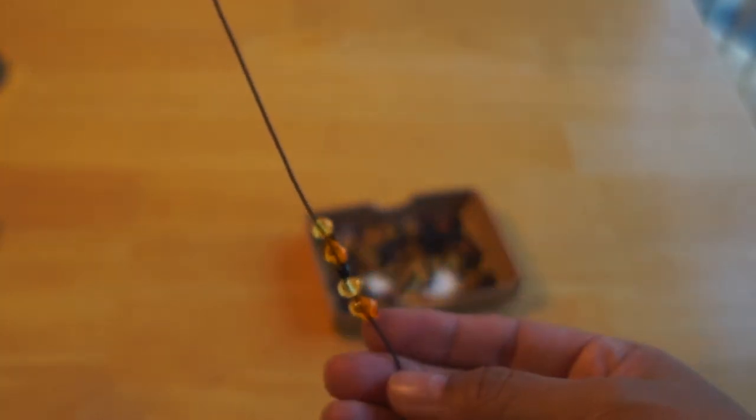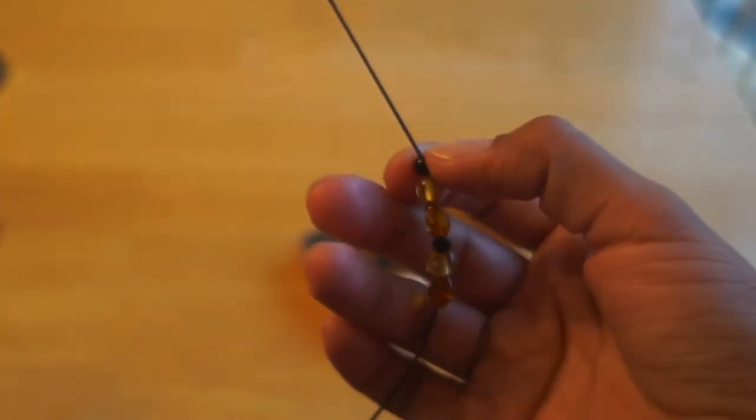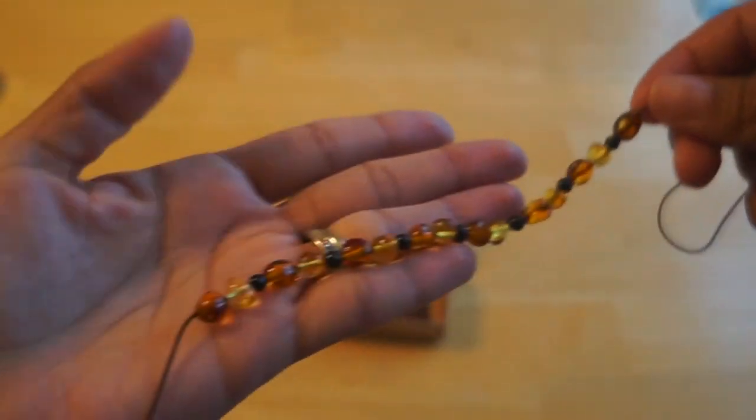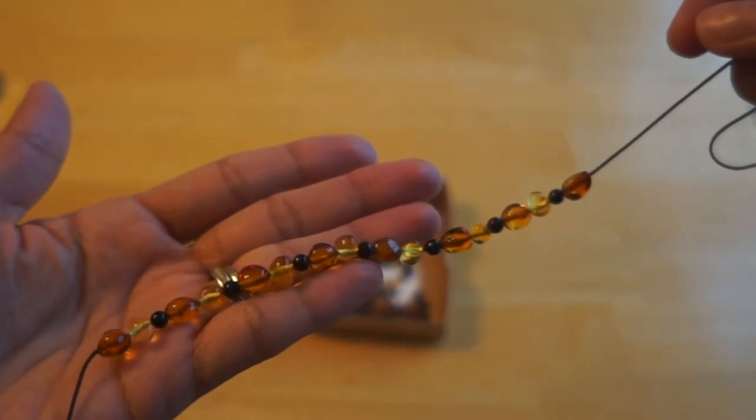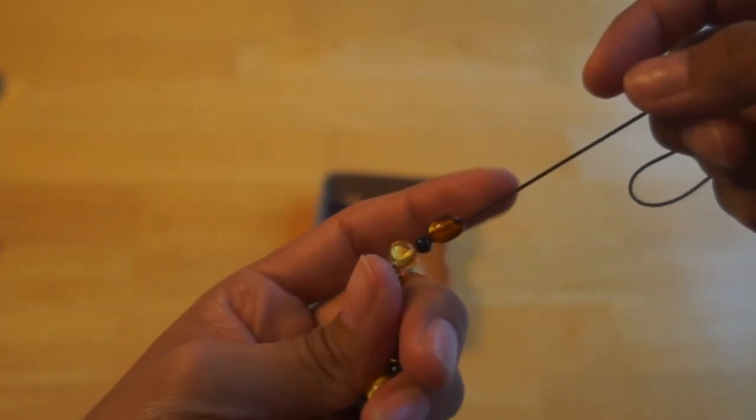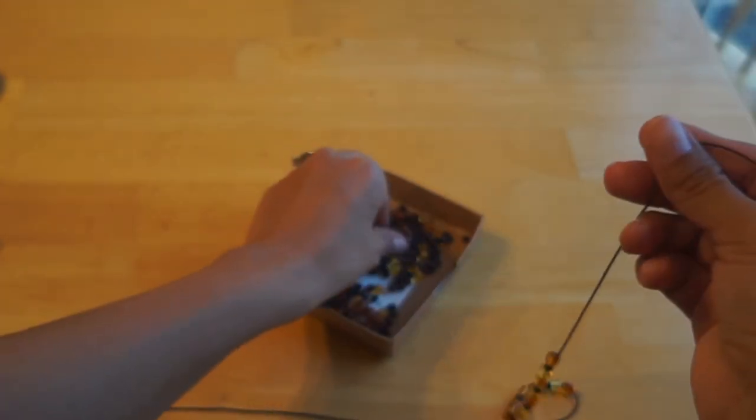As you can see the pattern's really starting to take shape and it's starting to come together really well. And right about now is where I choose to put the center shungite stone in and finish the rest of the other side.